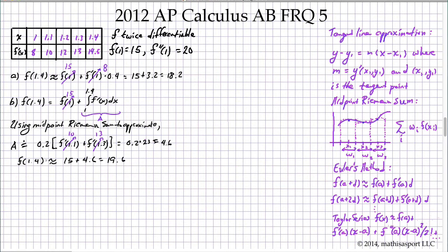Part C asks us to use Euler's method, and again, two steps of equal size. So Euler's method will first find f of 1.2 and use that in our approximation of f of 1.4.